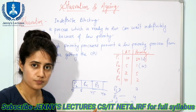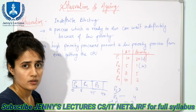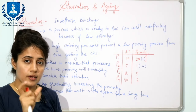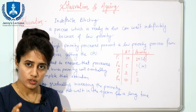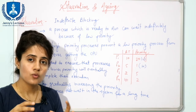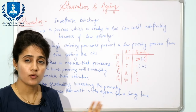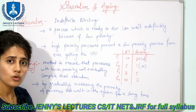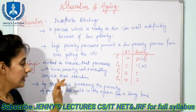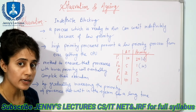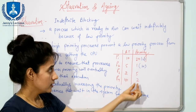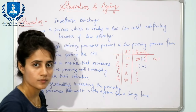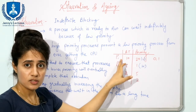The solution to this starvation problem is aging. Aging is a technique that gradually increases the priority of processes which are waiting in the system for a long amount of time. It is a method to ensure that processes with lower priority will eventually complete their execution. For example, at some point of time this priority becomes zero or one, and ultimately P1 will get the CPU.